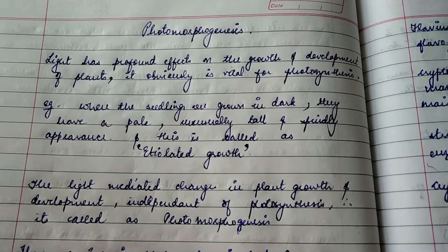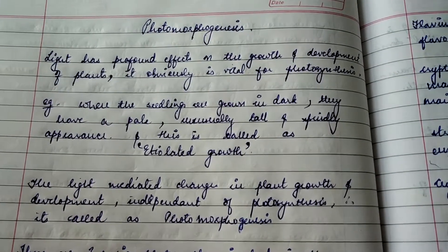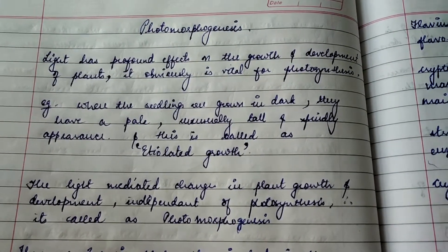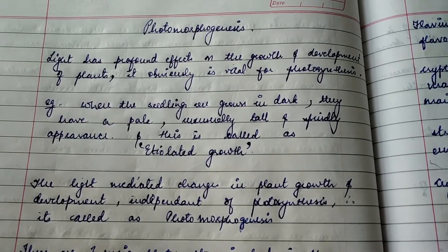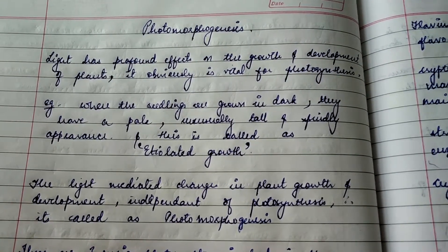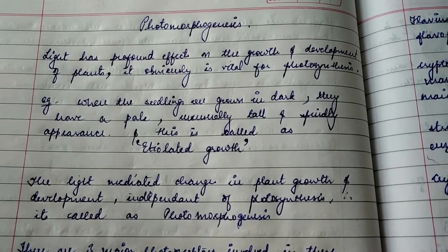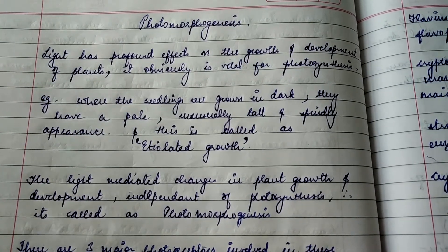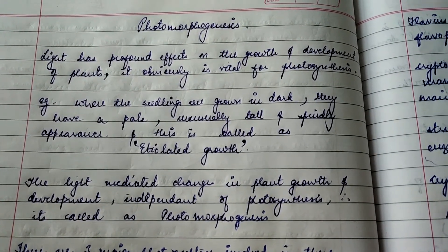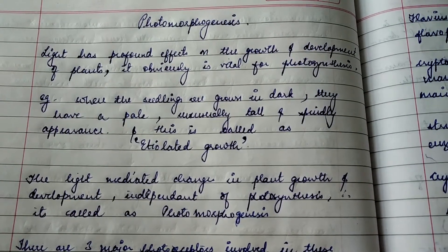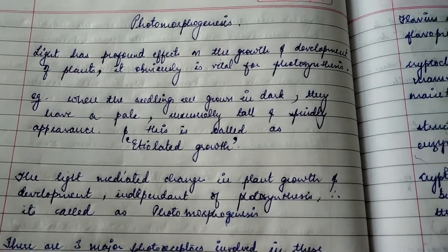Light has a major effect on the growth and development of plants. Whenever the sun is on the right side of the plant, all the plant leaves face toward the right, and if it is on the left, all the plant leaves face toward the left. We can see this very easily in sunflowers.